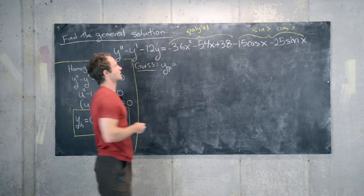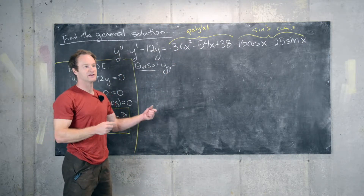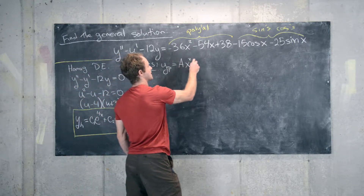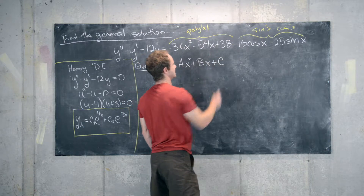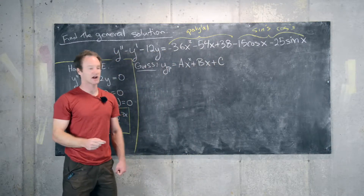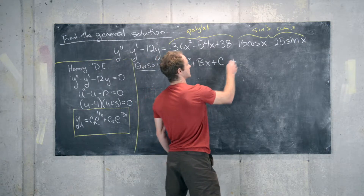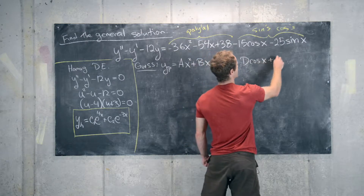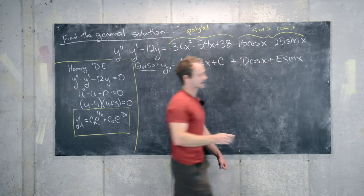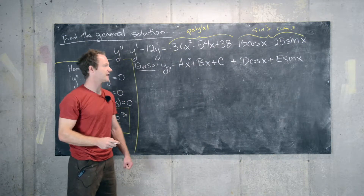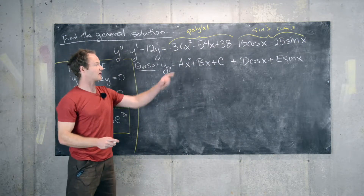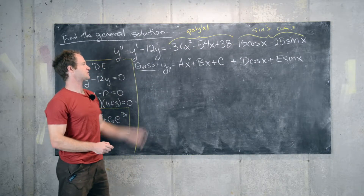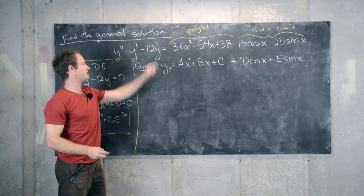Our guess for the particular solution should be a general quadratic polynomial — ax squared plus bx plus c — whose coefficients we don't know yet, plus a linear combination of sines and cosines: d cosine x plus e sine x. Since we want this to satisfy the differential equation, we need its first and second derivatives.